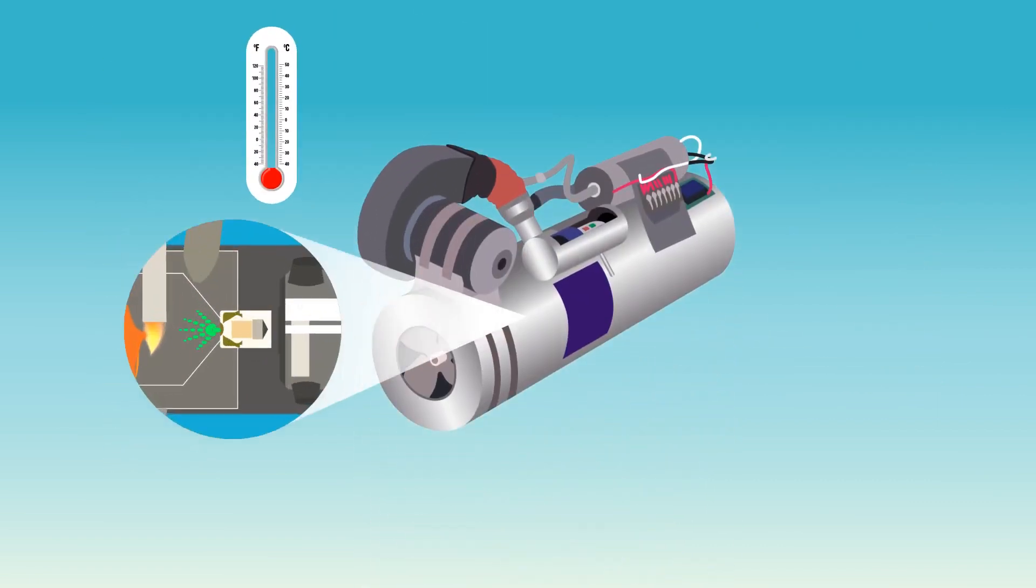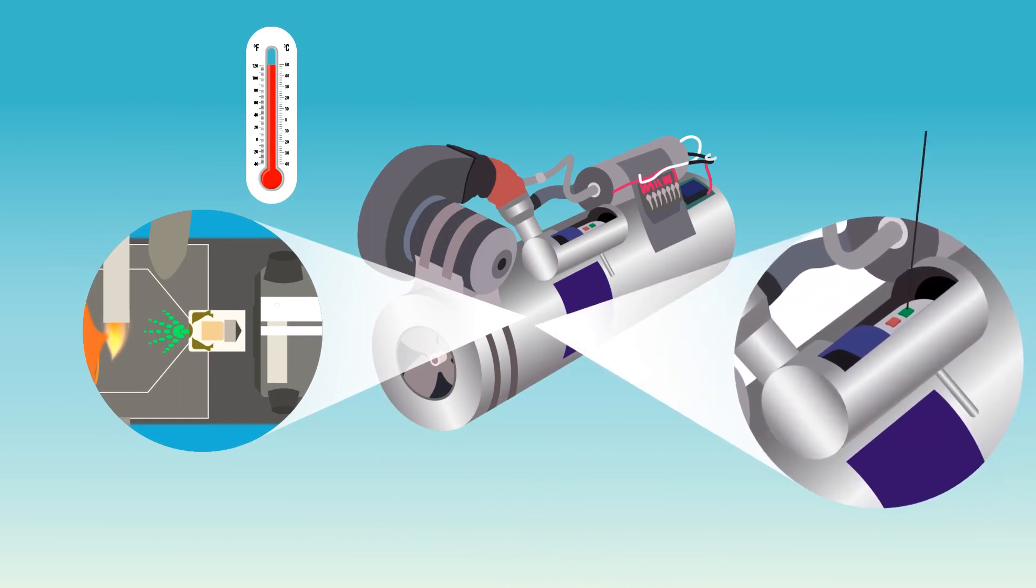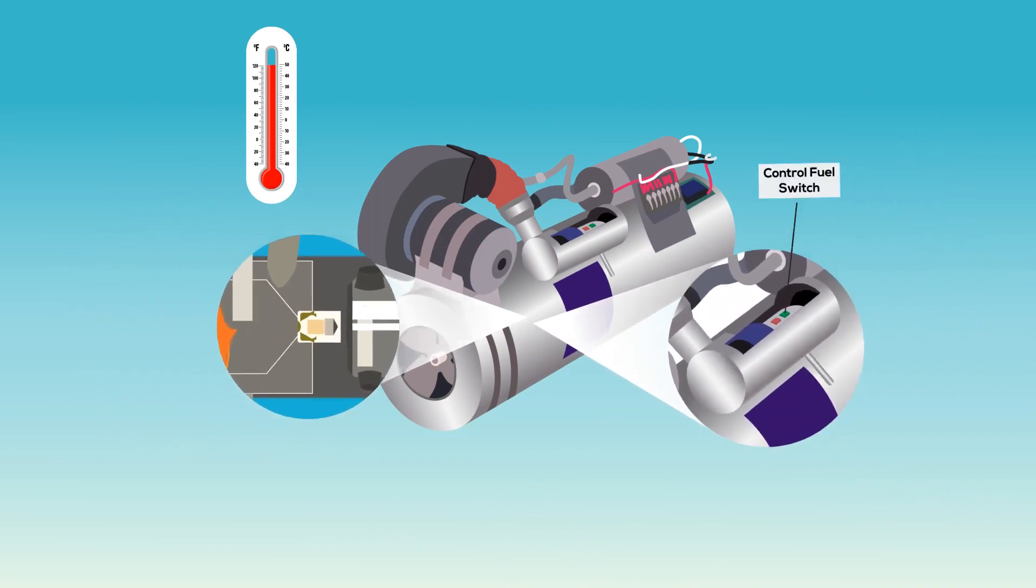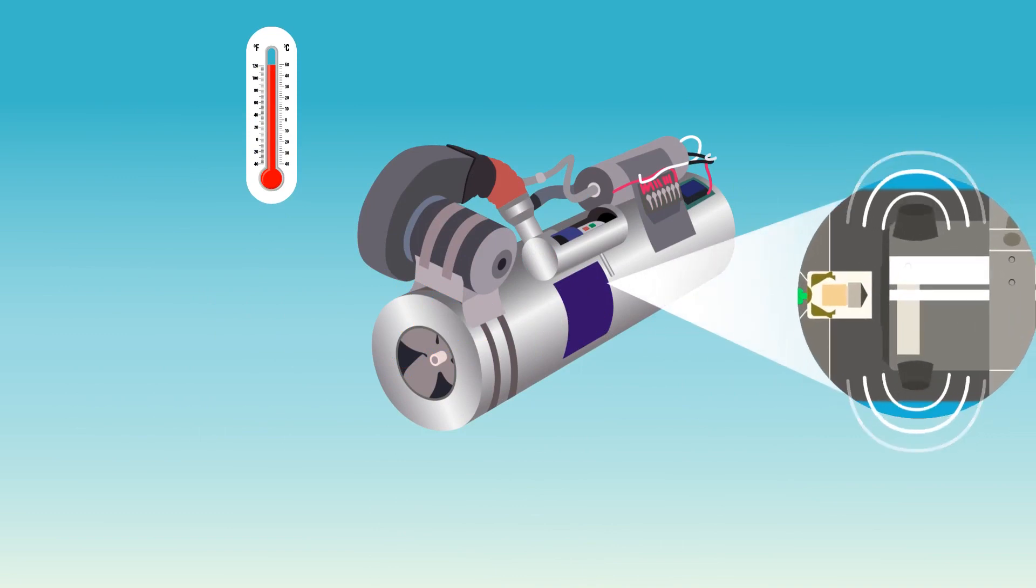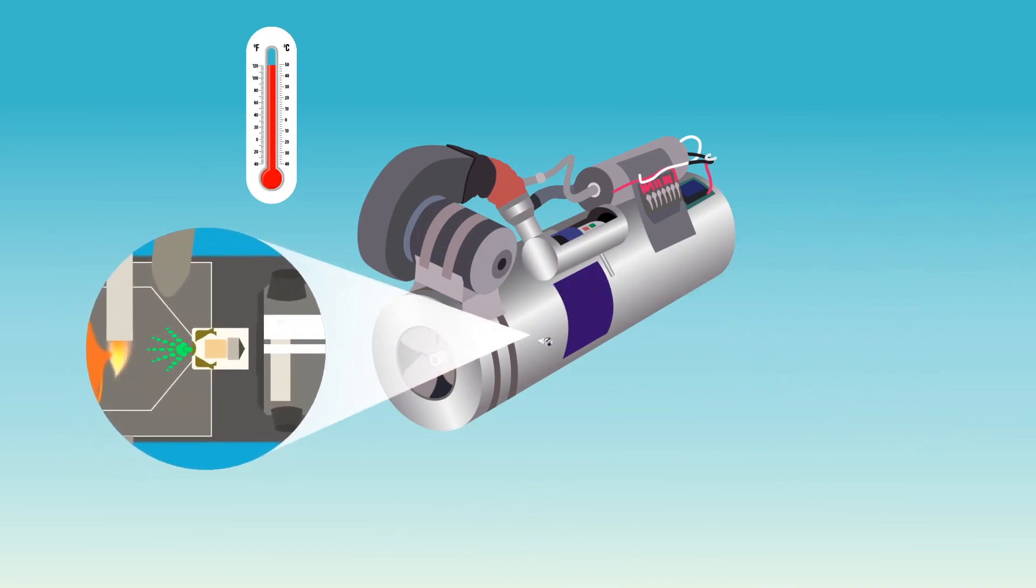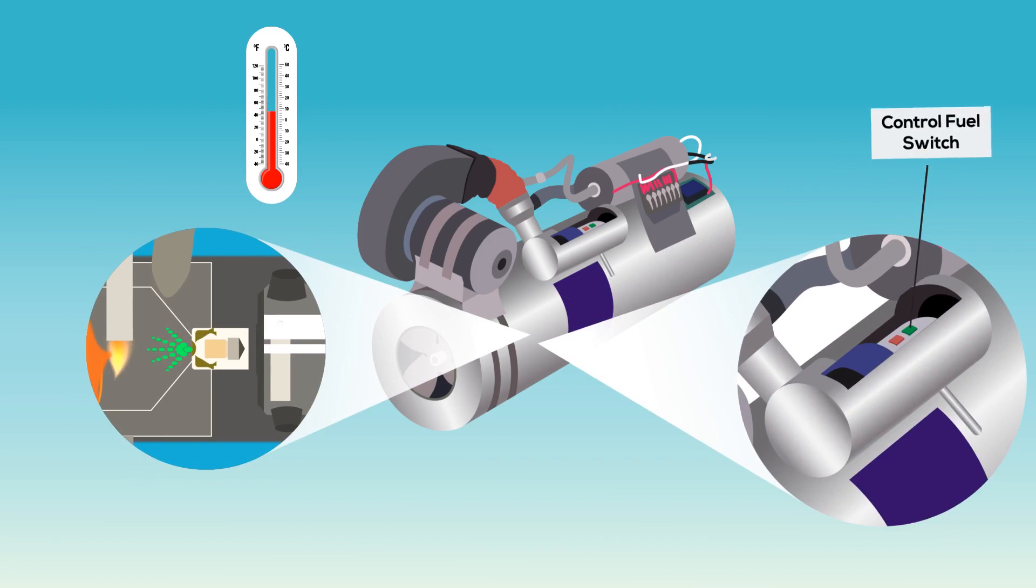As the thermostat reaches its preset temperature, it turns off the fuel solenoid and stops the flow of fuel into the combustion chamber. When ventilation air cools to the point that the thermostat senses that heat is required again, the thermostat turns the fuel solenoid on, and the burner starts again.